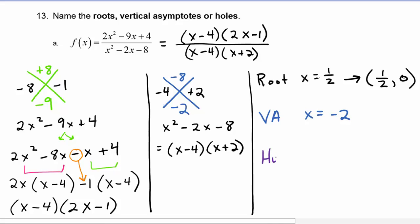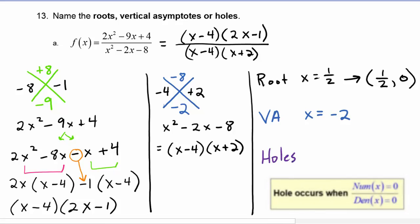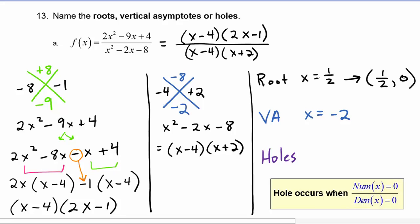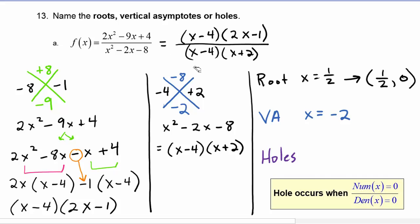Holes of a rational function occur when both the numerator and the denominator are zero at the same x value. One quick way to find holes is to look for common factors. Since we have x minus four in both the numerator and denominator, a hole will occur at x equals four.